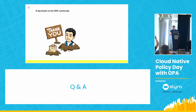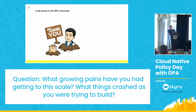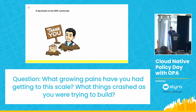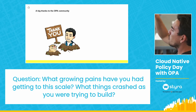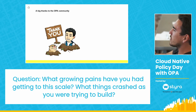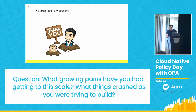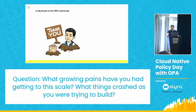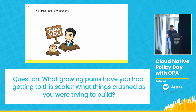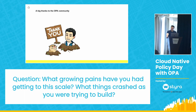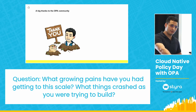Audience question: Can you tell us a little about the growing pains you had getting up to the scale you reached? What things did you notice — did things crash as you were trying to build your solution at those scales and peaks? Were you able to handle 45,000 OPA instances a day?